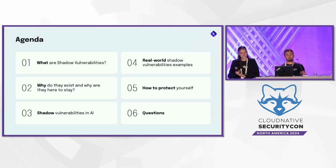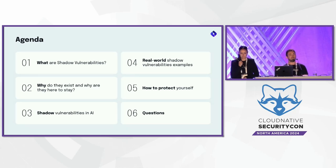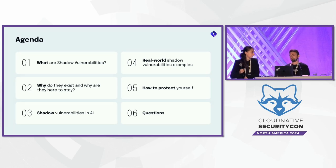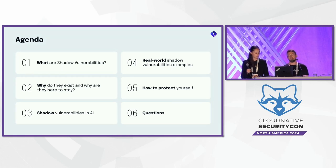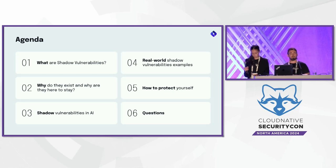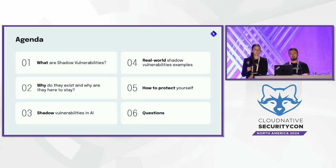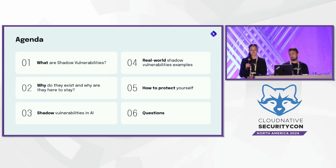A little bit about what's going to be covered. First, we'll dive into what shadow vulnerabilities are and why they are here to stay — they're like a persistent threat that will keep happening, and we'll understand why. Then we'll understand why they are particularly common in AI. We'll dive into some real-world examples of shadow vulnerabilities that led to actual attacks. And finally, we'll understand how we can protect ourselves from them. We will have time for questions, so please write them down.